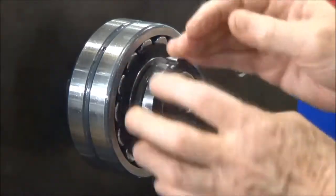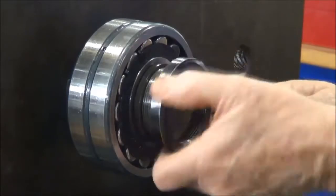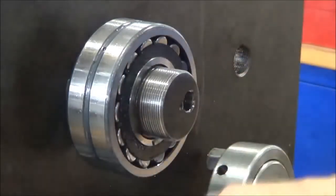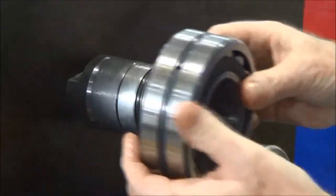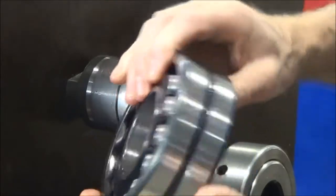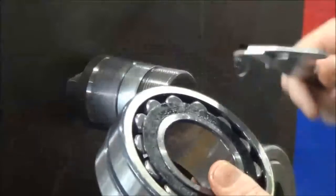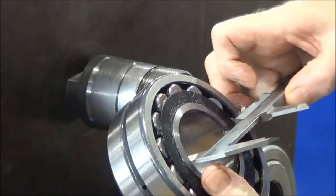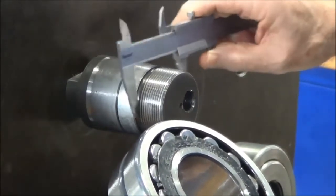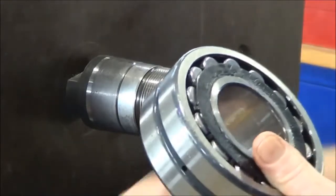That's the slotted lock nut that we're just undoing, screwing off now. Behind that is a small spacer that pushes the bearing onto the shaft. Checking the internal bore of the bearing is important to get the correct size, but we'll do that a little later when we come to fit the bearing.